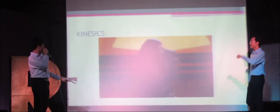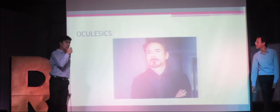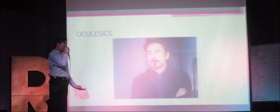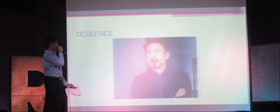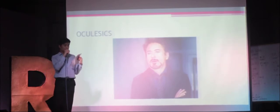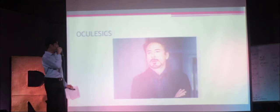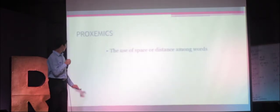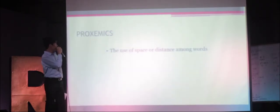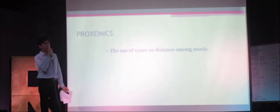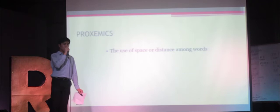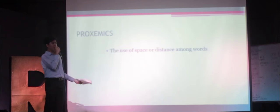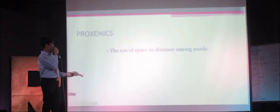Now we move on to oculistics — this is the eye movements. Oculistics can communicate. Thank you, Red Valgarama. Oculistics is the eye movement. It can communicate that someone is bored, or it can communicate the use of space or distance. Oculistics can also mean that you are feeling emotional or somewhat excited. If you speak fast, that communicates that you are excited about something.